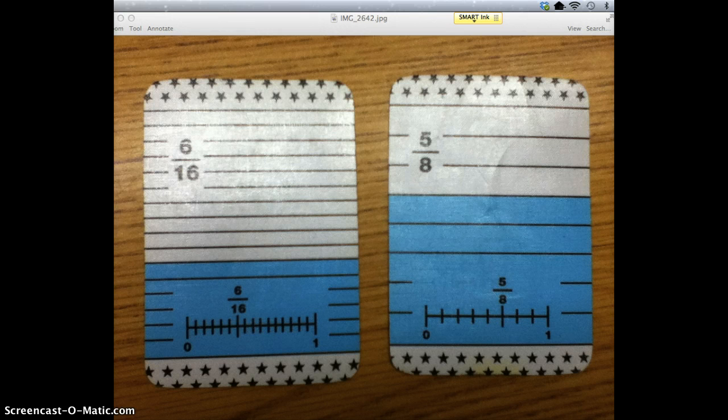The way you do it is to turn over two cards, or three if there are three of you playing, and the person whose card has the largest fraction wins. So that person will take all the cards.